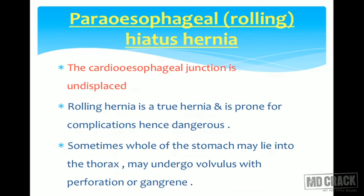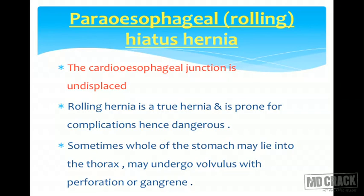The second variety is the paraesophageal, also called rolling type of hiatus hernia. In rolling hernia, something rolls beside the esophageal hiatus, while the cardioesophageal junction remains undisplaced. Rolling hernia is the true hernia, prone for complications, and hence dangerous. Sometimes the whole stomach may lie in the thorax or mediastinum, and may undergo volvulus, perforation, and gangrene if blood supply is compromised.